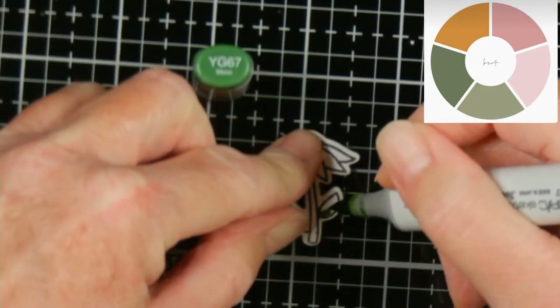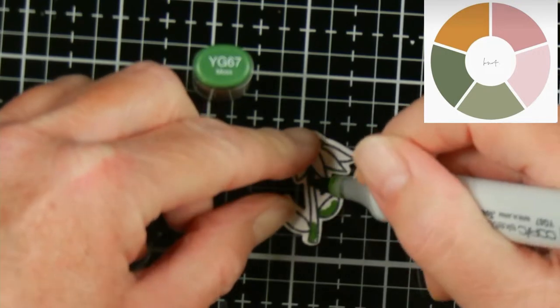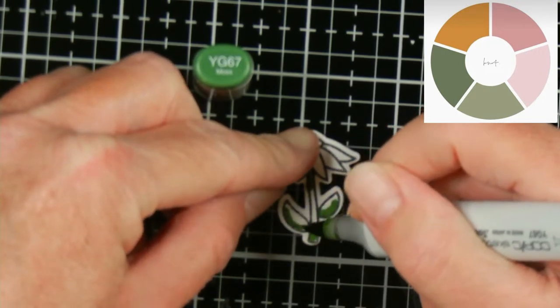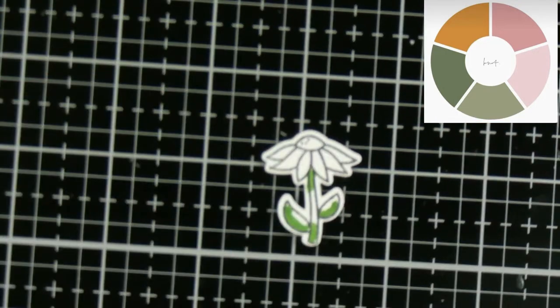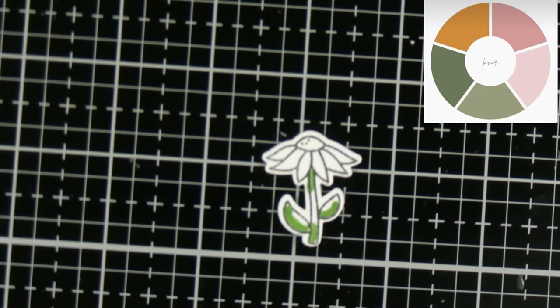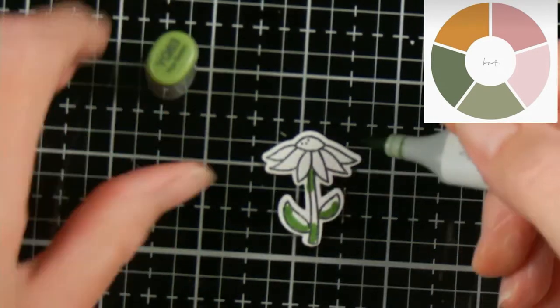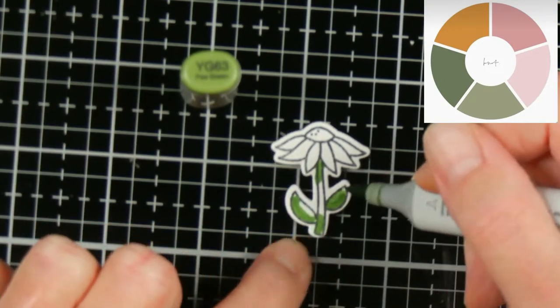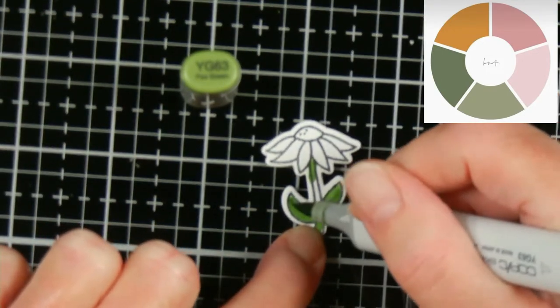For my stamped images I used Memento Tuxedo Black ink and then I used a Copic Friendly paper which was Neenah. I cut the images out with the die cuts. I also have a Scan and Cut so that's another option that you have.